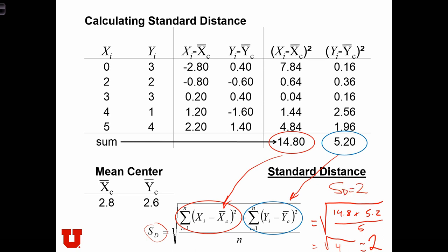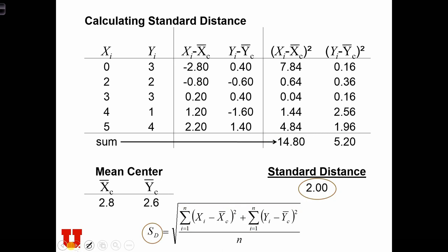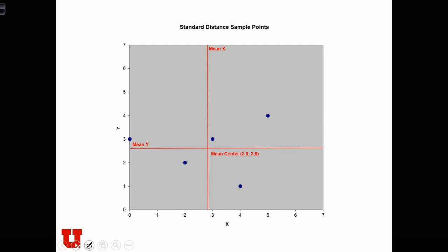What that means is on average, points are about two distance units away from the mean center. Here we are with the point distribution and the mean center. And in order to illustrate the standard distance, we are going to draw a circle with its origin at the mean center having a radius of the standard distance.